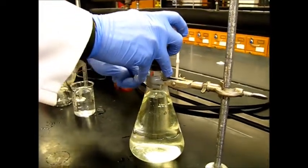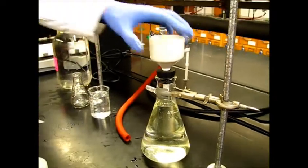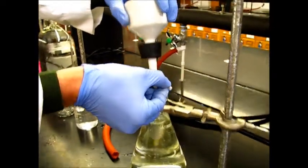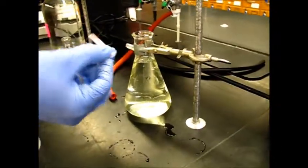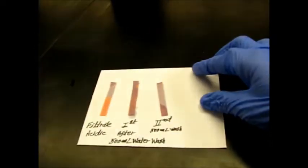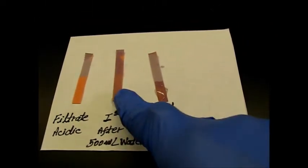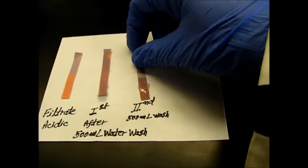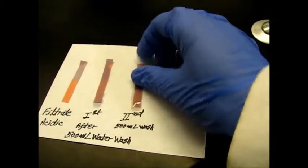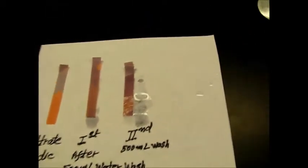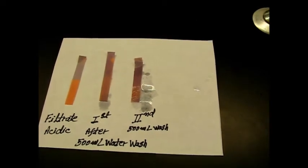This is the second 500 mL water wash and we will check the pH of filtrate from the Buchner funnel and compare with the previous one. Here you can see the difference - this is the acidic filtrate, and after the first 500 mL water wash it was a little bit pink, and this is after second wash, much better. We will give one more 500 mL and then it will be ready for crystallization.